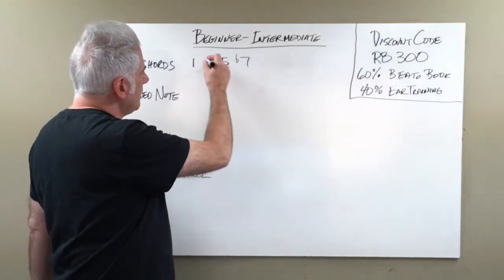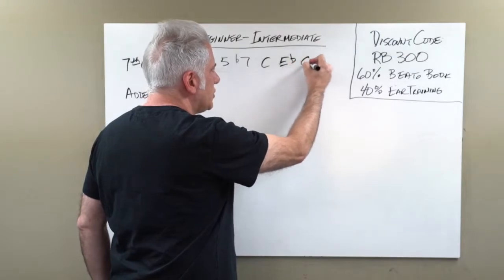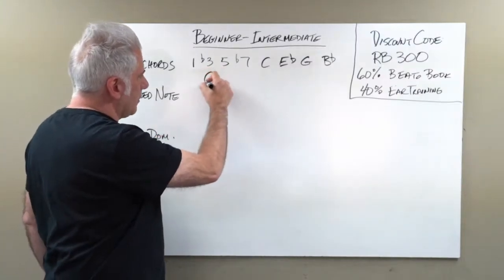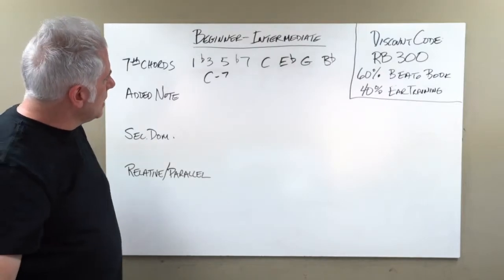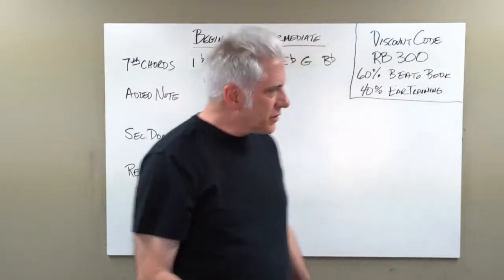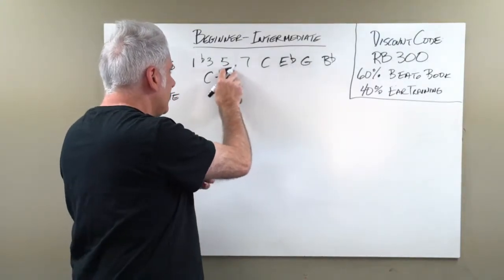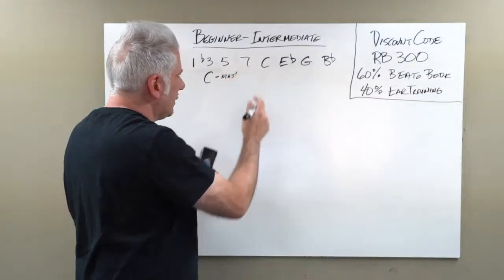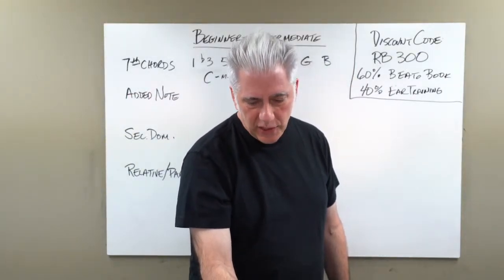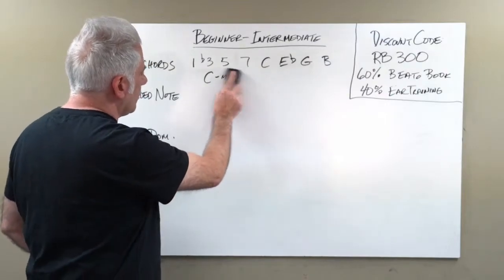There are other types of seventh chords. You can have a minor 7 - C minor 7 would be C, E flat, G, B flat. If it actually has a major 7 on it, that's a minor major 7 - kind of sounds like James Bond. It has the major 7: C minor major 7 would be the C minor triad C, E flat, G with a major 7 on top, making the seventh note B.